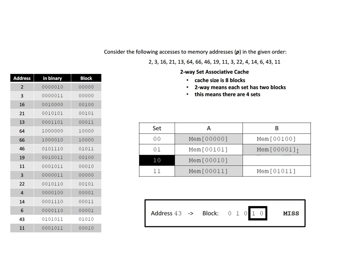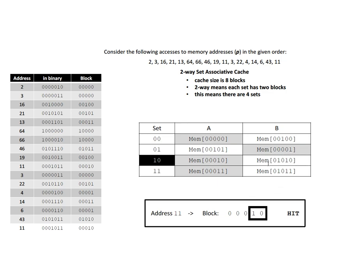Next is block 001010, which has never been loaded into the cache. We're looking for it in set 00 — it's not there, but there's space available, so we add it without eviction. Finally, we access address 11, which is in block 00010, mapping to set 10. That is a hit.